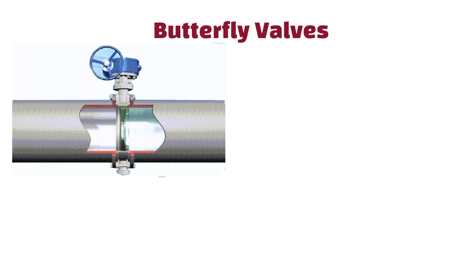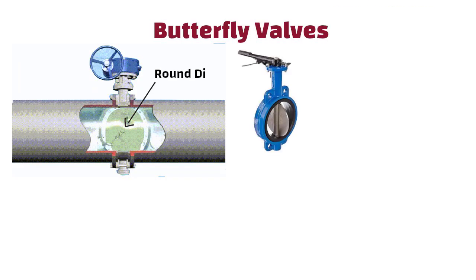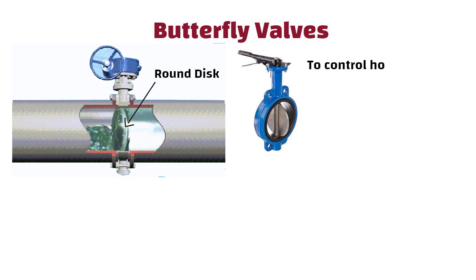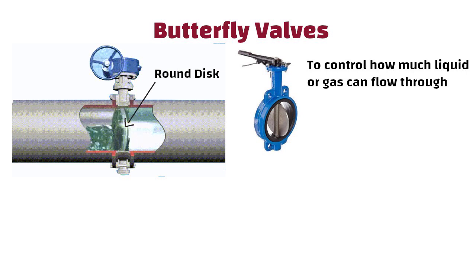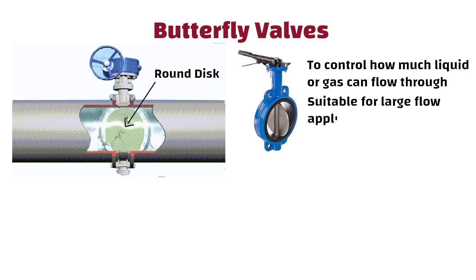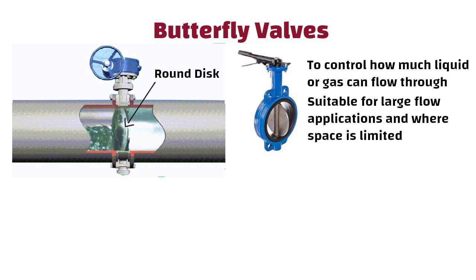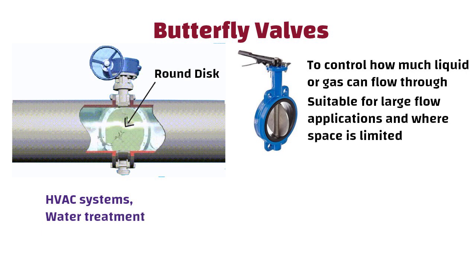Butterfly valves use a round disc that turns around a middle point to control how much liquid or gas can flow through. These types of valves are suitable for large flow applications and where space is limited, such as in HVAC systems, water treatment and industrial processes.